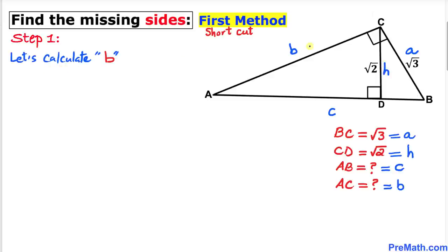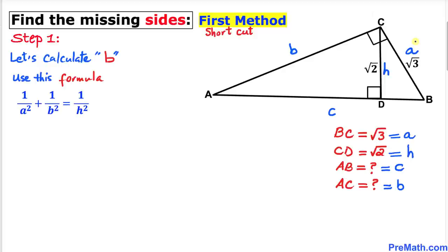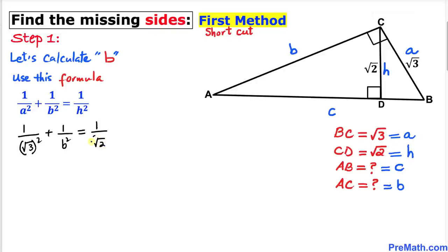In this first step let's calculate the value of side length b. We will be using the formula: 1 over a squared plus 1 over b squared equals 1 over h squared, where our a value is square root of 3 and our h value is square root of 2. So let's fill in the blanks: 1 over square root of 3, squared, plus 1 over b squared equals 1 over square root of 2, squared. The square and square root undo each other, so we get 1 over 3 plus 1 over b squared equals 1 over 2.